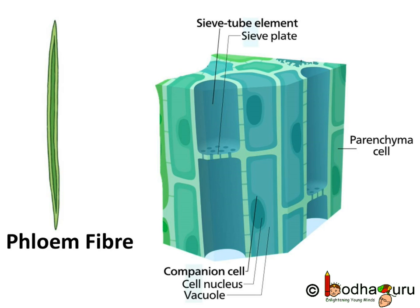Phloem is also made up of four types of cells: sieve tubes, companion cells, phloem fibers, and phloem parenchyma. Sieve tubes are tubular structures with perforated walls. Amongst these, only phloem fibers are made of dead cells. The rest — sieve tube cells, companion cells, and phloem parenchyma — are living cells.